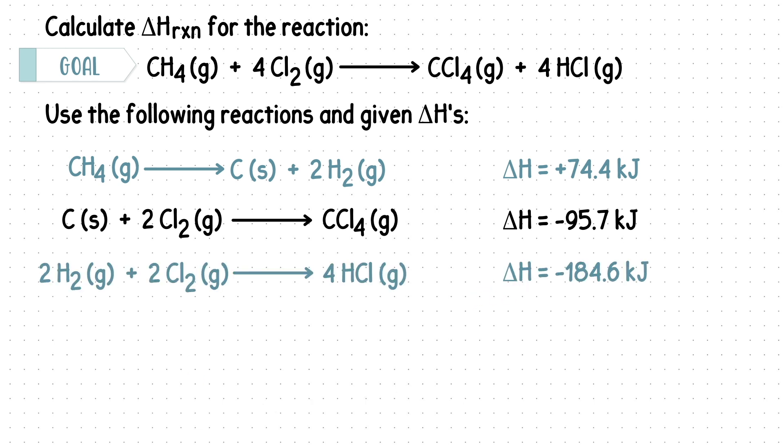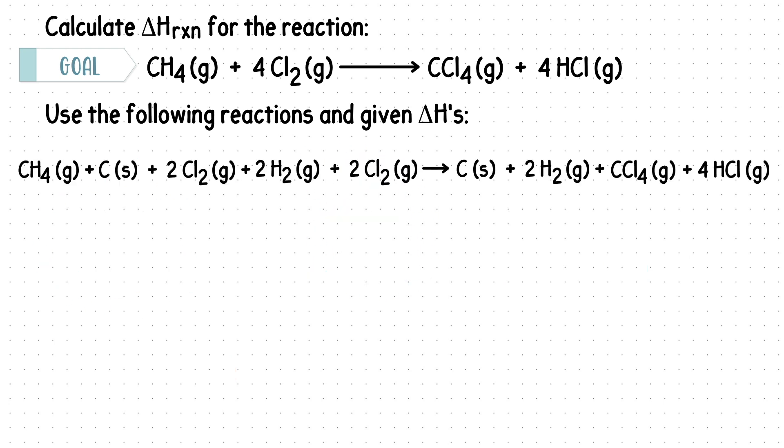Now that we located each reactant and product, we can use rule 3. We will add up all the reactions first. All of the reactants will be on one side, and all the products will be on the other side. We can cancel out like terms that are on opposite sides. We'll cancel out the carbon here and here.